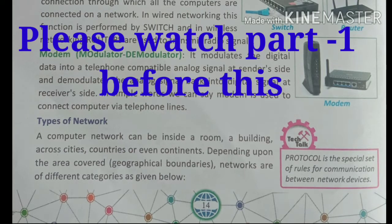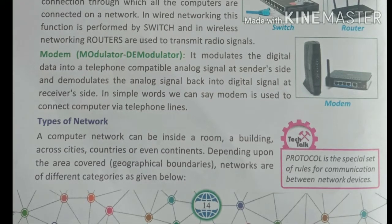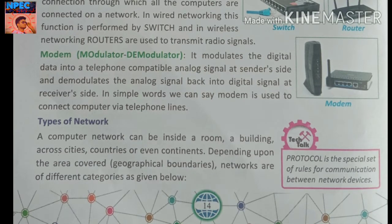Computer networks can be inside a room, a building, across cities, countries, or even continents. Depending upon the area covered and geographical boundaries, networks are of different categories as given below.